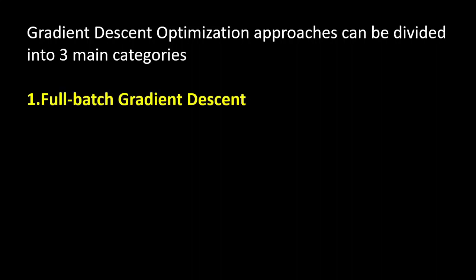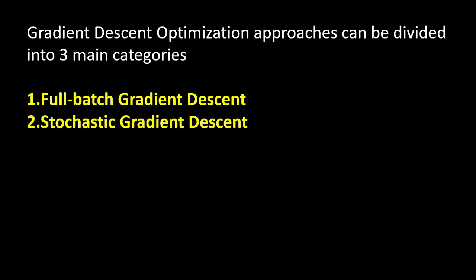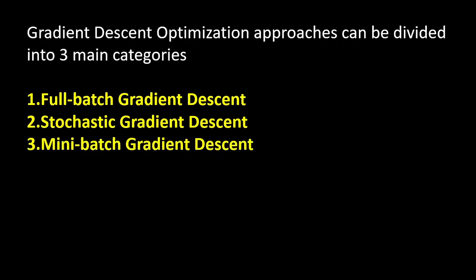Gradient descent optimization approaches can be divided into three main categories: full batch gradient descent (also called batch gradient descent), stochastic gradient descent, and mini batch gradient descent.